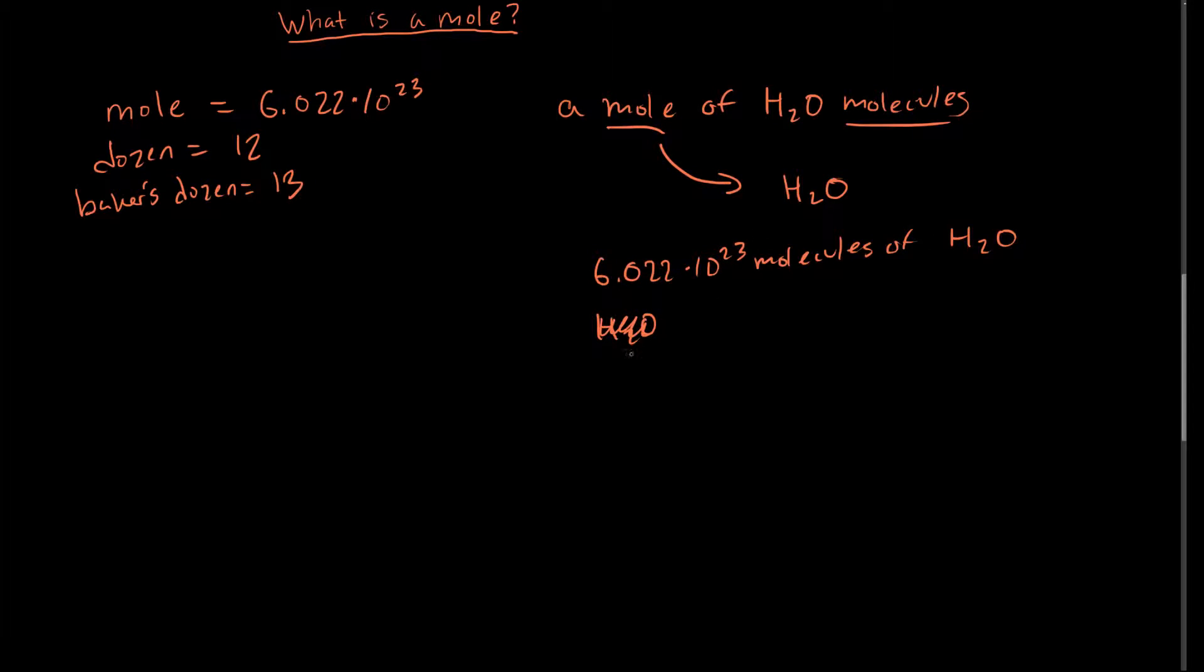It's really just saying however many of whatever we're talking about we have. So if I had a mole of oranges, blue oranges, if I had a mole of oranges, this would be 6.022 times 10 to the 23rd oranges.